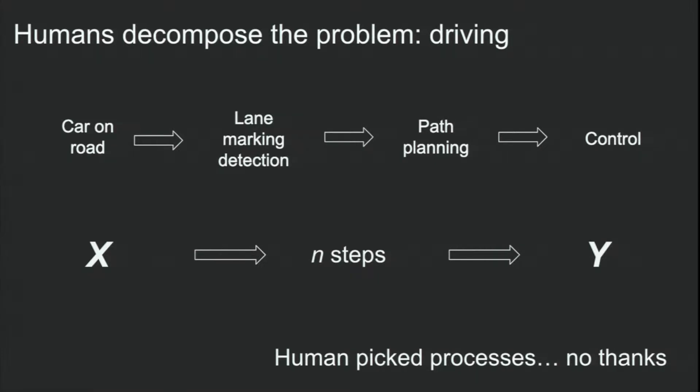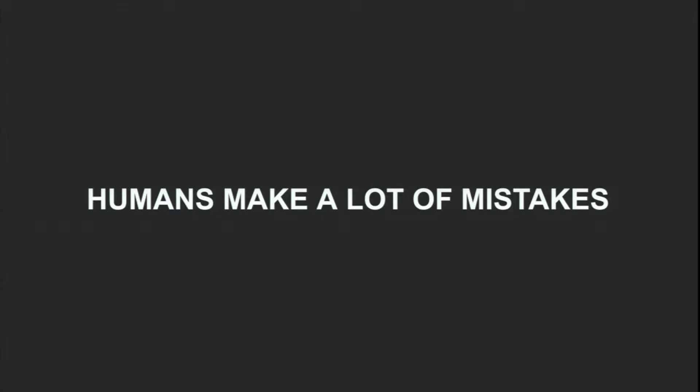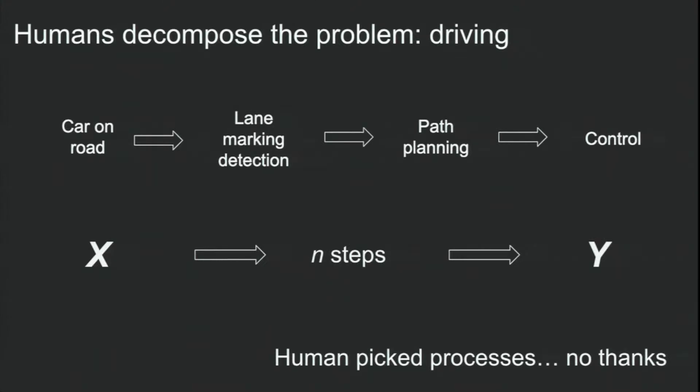And the reason for it is because this is what a traditional machine learning system looks like. So you start with your X variable, your input, and then there's any number of steps that the human deems necessary to get to your desired output. The problem with this is that humans make a lot of mistakes.